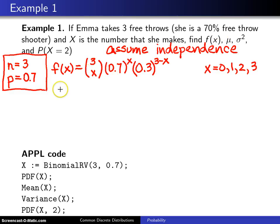The next thing to calculate is the population mean mu, written as the expected value of x for the binomial distribution. The formula is n times p, so in this case, 3 times 0.7 is 2.1.